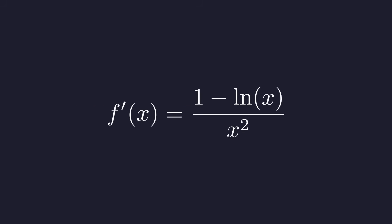But finding a critical point is just the beginning. We need to verify that it's actually a maximum, not a minimum or inflection point. Let's think about the sign of this derivative. The bottom part, x squared, is always positive for any positive x. So the sign of the derivative depends entirely on whether 1 minus the natural log of x is positive or negative.